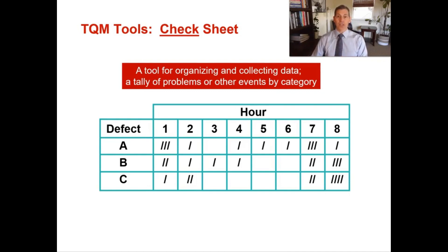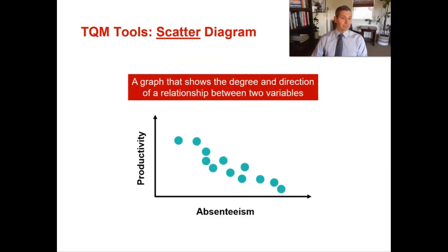It's a very simple and useful tool for gathering data. The next tool is a scatter diagram, which we covered in Chapter 4 on Forecasting. It's a graph that shows the degree and direction of a relationship between two variables.